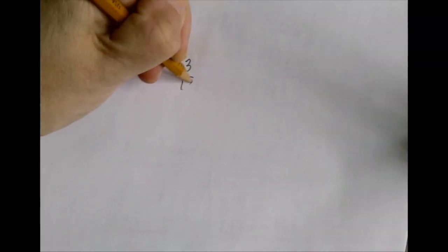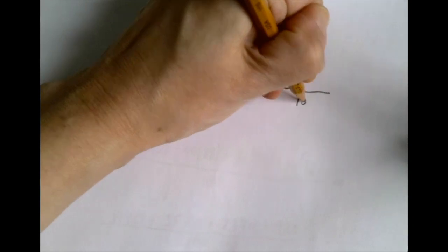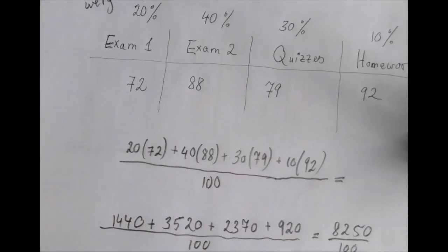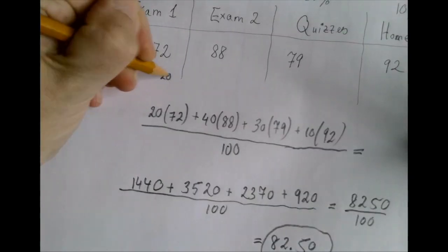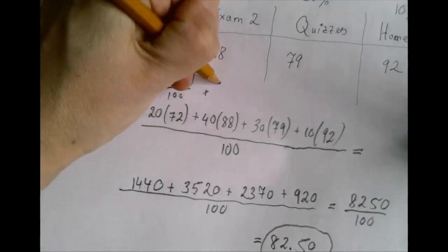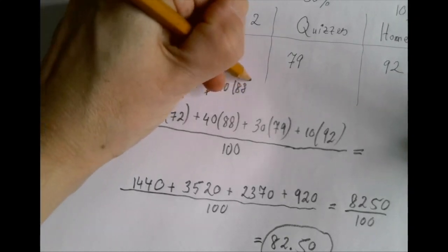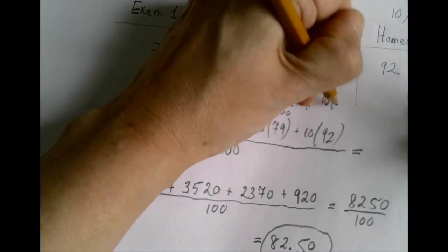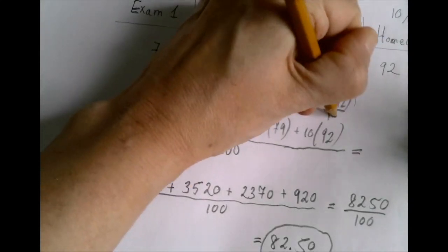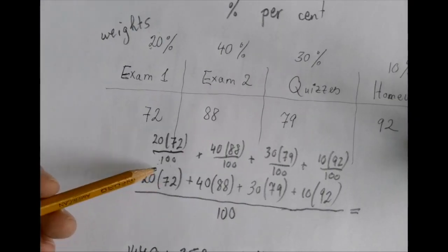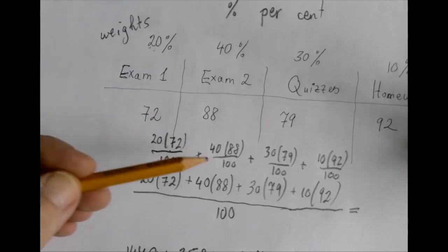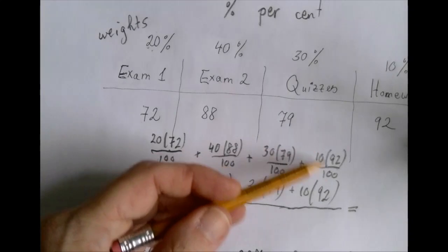Let's look at this notation again. Recall that when we add two fractions, we usually write them with a common denominator — that can work backwards too. This long expression can be written as: (20/100)×72 + (40/100)×88 + (30/100)×79 + (10/100)×92. Notice that 20 over 100 is 20%, 40 over 100 is 40%, and so on.